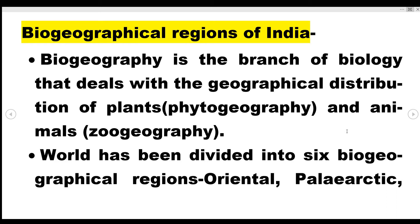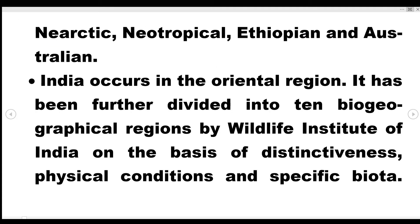The world has been divided into six biogeographical regions: Oriental, Palearctic, Nearctic, Neotropical, Ethiopian, and Australian. India occurs in the Oriental region. It has been further divided into ten biogeographical regions by the Wildlife Institute of India, on the basis of distinctiveness, physical conditions, and specific biota.